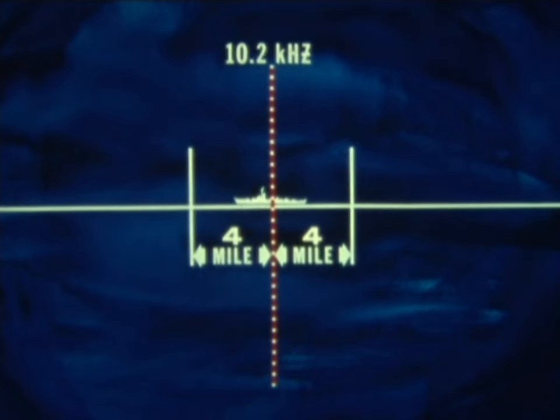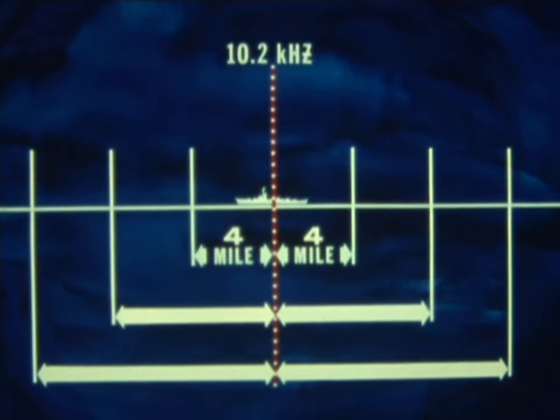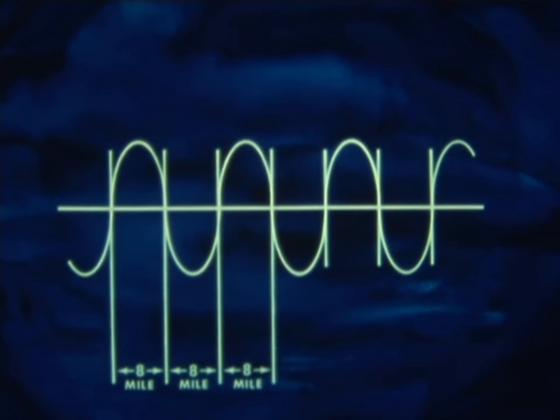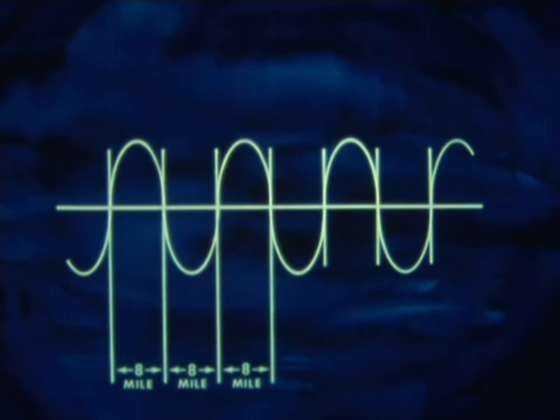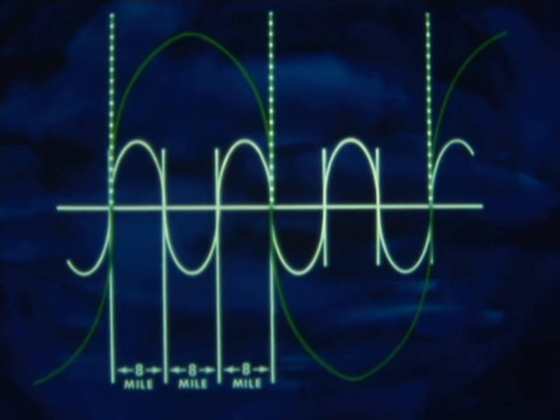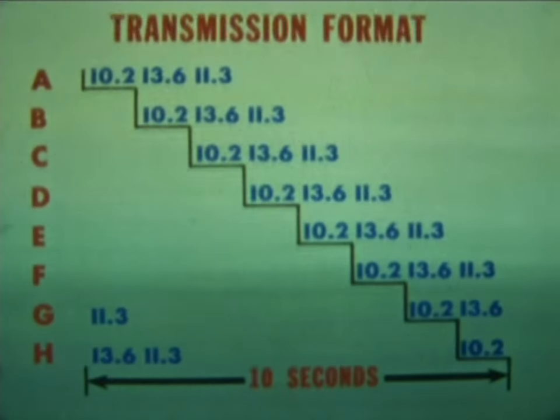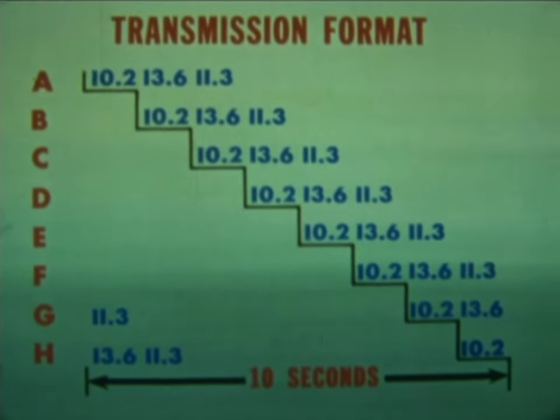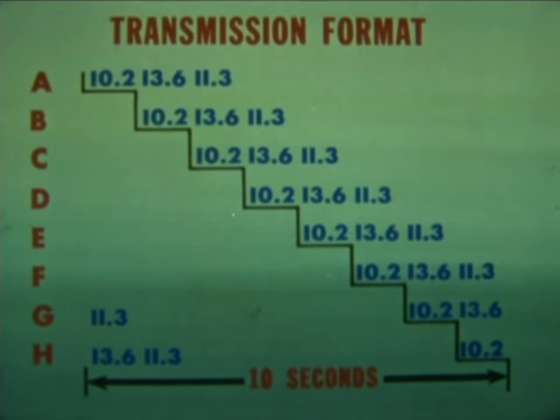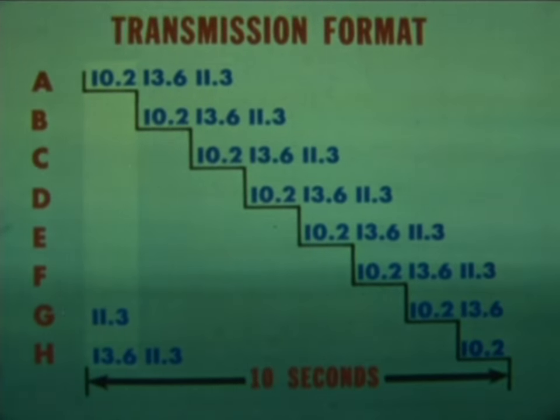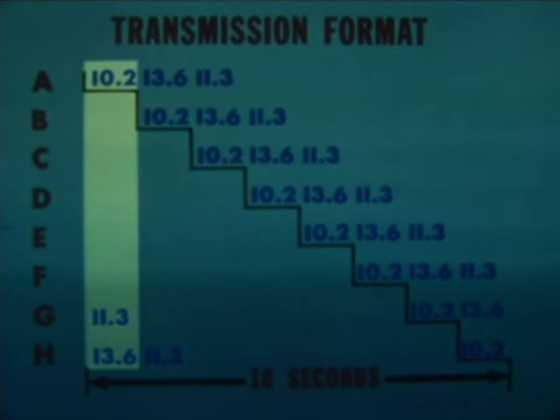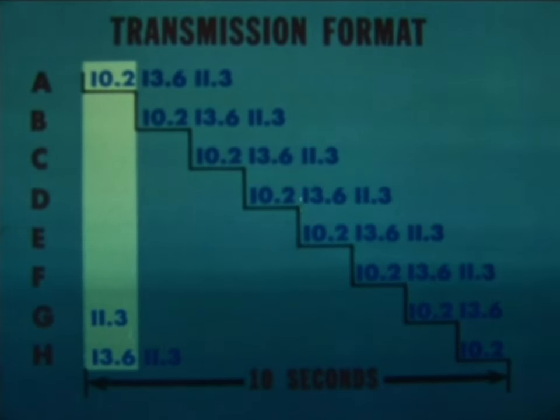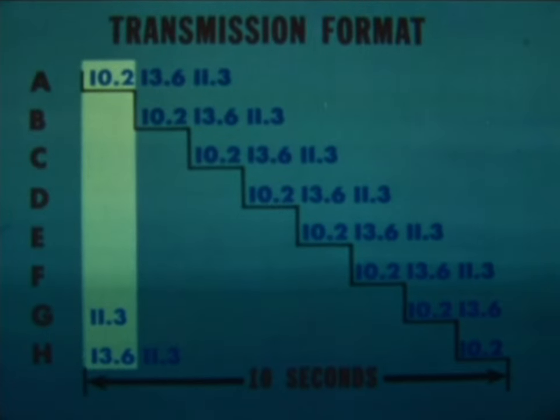Obviously, the whole problem of determining which lane the ship is in could be greatly simplified by making the lanes wider. Since lane width is a function of frequency, we can get the additional area simply by changing the frequency. This is precisely the way the omega system resolves lane ambiguity, by having the stations transmit at frequencies of 13.6 kilohertz and 11.1 kilohertz, as well as their basic frequency of 10.2 kilohertz.